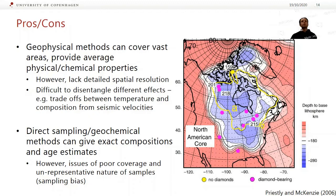Obviously, if we do direct sampling and use geochemistry, we can measure the exact composition of a chunk of mantle and have a guess at the age of it — there are a couple of methods we'll talk about. The problem is the coverage is pretty poor. In the same area you can cover with a vast geophysical survey, there are only a few kimberlite occurrences that bring up xenoliths and allow you to sample the mantle directly. There is probably also some sampling bias — we need to ask ourselves why mantle samples are being brought up where they are.